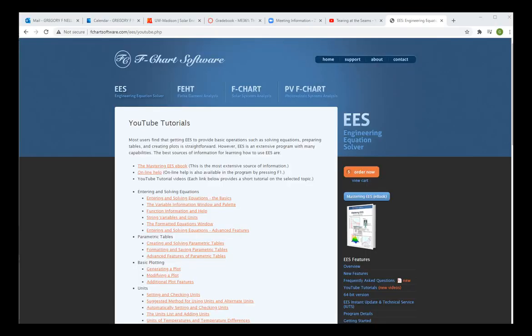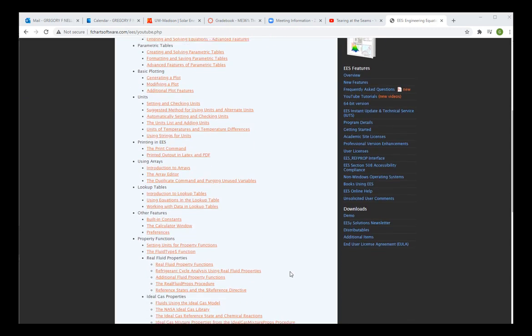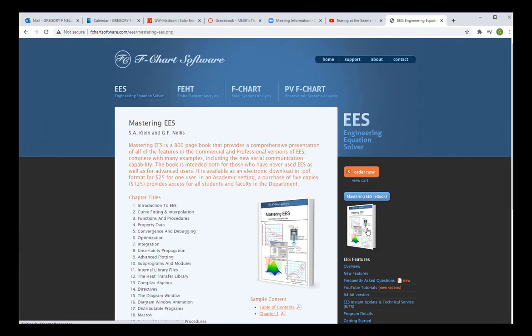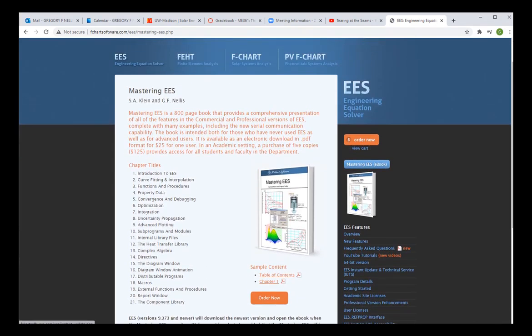So this is one of a series of tutorials that is meant to describe the operation of the EES software. If you'd like to get more information about EES, obtain the software, or access more of these tutorials, please go to the website fchartsoftware.com. These tutorials are excerpted from the book Mastering EES, which can also be obtained from the fchart software website.